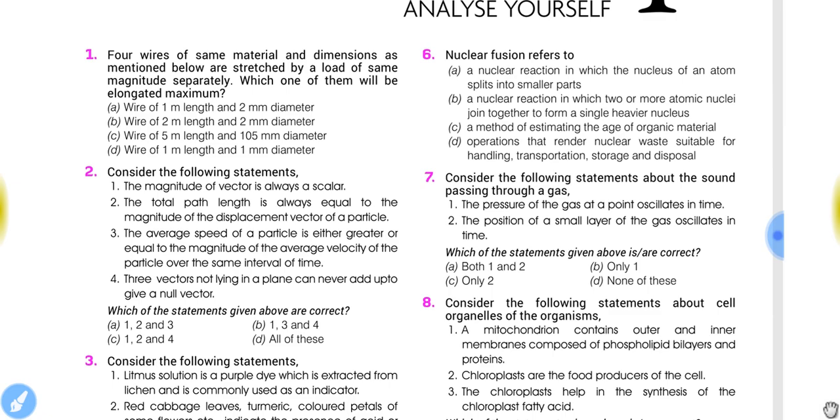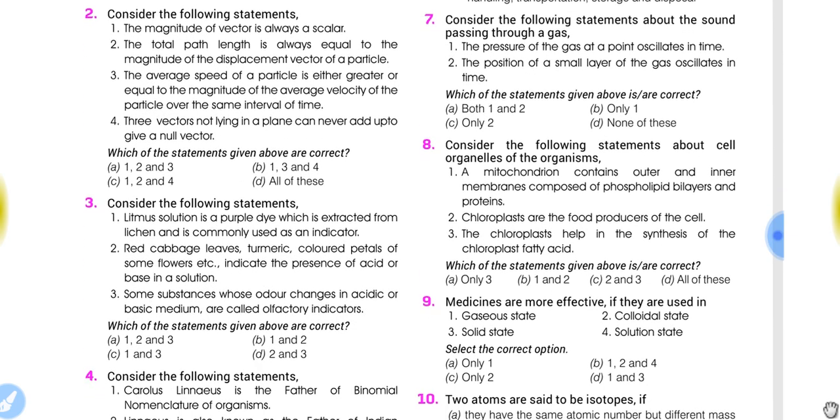Question number 3: Consider the following statements. Litmus solution is a purple dye which is extracted from lichen and is commonly used as an indicator. Red cabbage leaves, turmeric, colored petals of some flowers, etc., indicate the presence of acid or base in a solution. Some substances whose odor changes in acidic or basic medium are called olfactory indicators. The correct option to this question is option A. Statements 1, 2, and 3 all are correct.